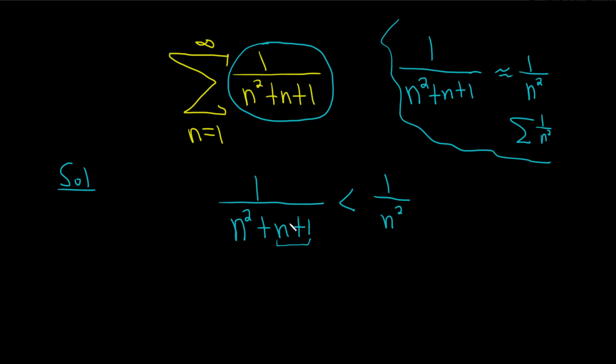Remember, when you make the bottom of a fraction bigger, the fraction itself becomes smaller. I always think like 1 over 100 is smaller than 1 over 10. Why? Because 100 is bigger than 10. Same idea here.